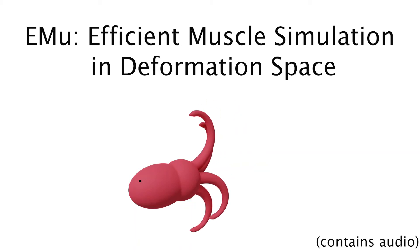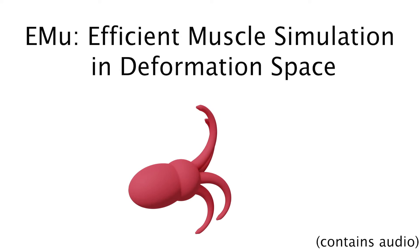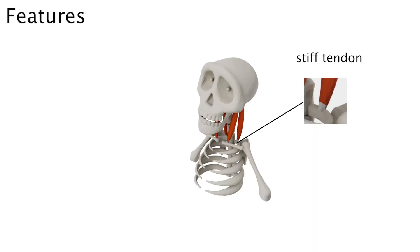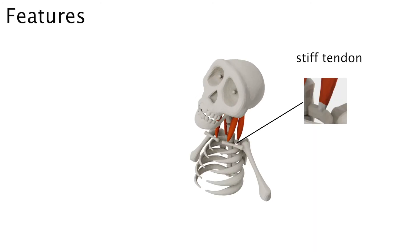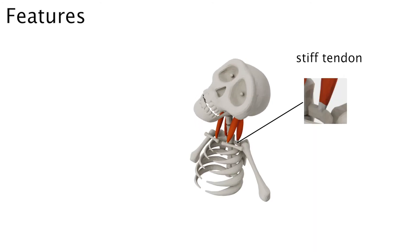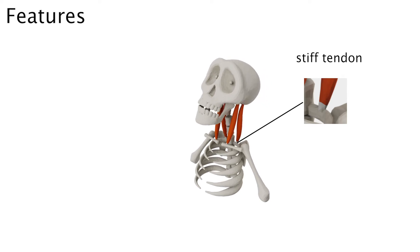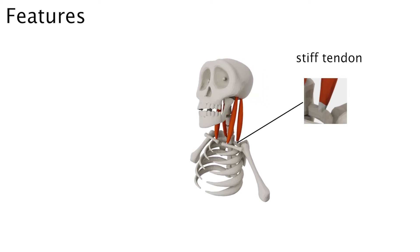EMU is an all-encompassing musculoskeletal simulation framework that handles joints and preserves volume during muscle contraction. It handles stiff tendons and nearly rigid bones, and allows for anisotropic muscle fibers with realistic activation models and realistic material parameters.